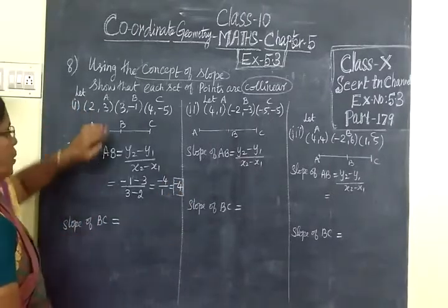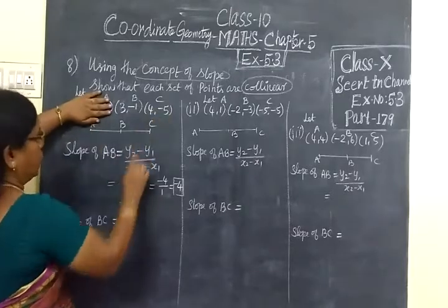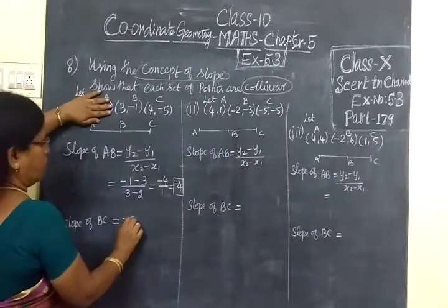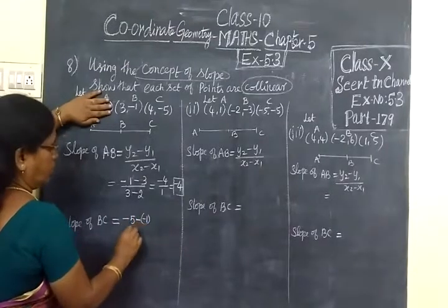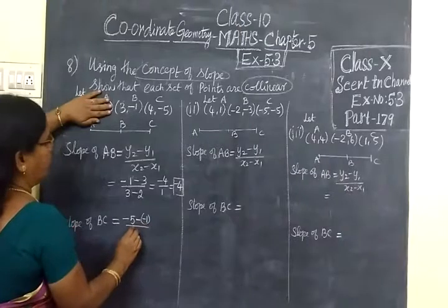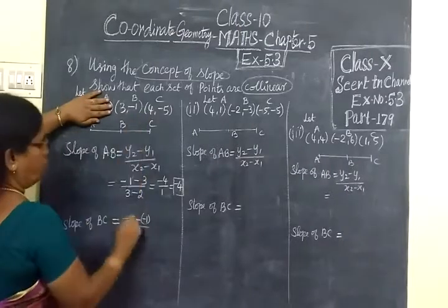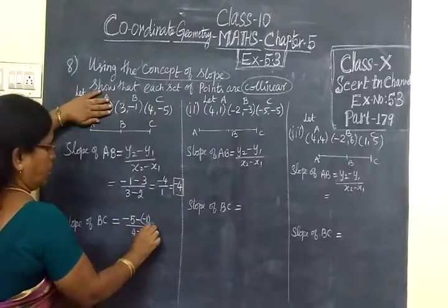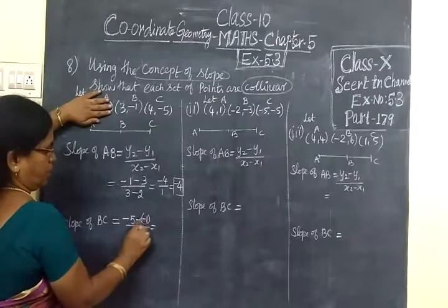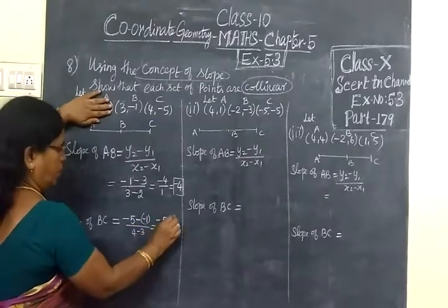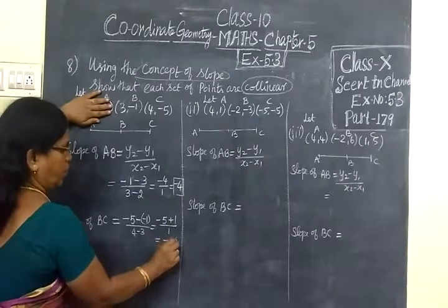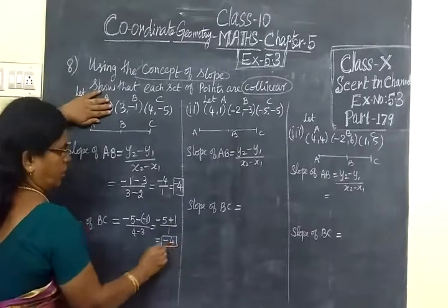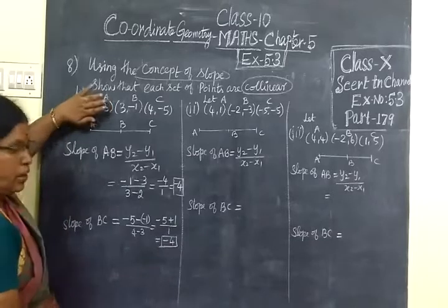Same answer should come here for slope of BC. Y2 is minus 5, minus Y1 which is minus 1. By X2 minus X1, 4 minus 3. Equal to minus 5 plus 1, by 1. This equals minus 4 by 1. So both slopes are equal.